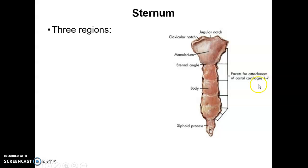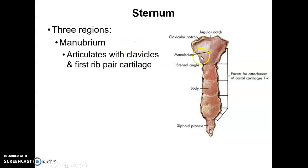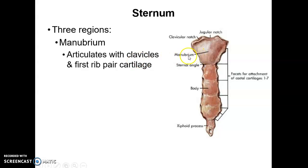So let's look at the sternum. It has three parts or regions. The manubrium is the superior portion; it articulates with the clavicles at the clavicular notch. It also articulates with the first pair of ribs — actually the cartilage of the first pair of ribs.